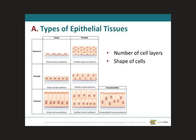We can classify epithelial tissue in two ways: either with regards to the number of cell layers or the shape of the cell. So let's talk about cell layers first. As you can see over here on the image, the tissues can either have one cell layer or they can have more than one cell layer. If they only have one cell layer, we call it simple.